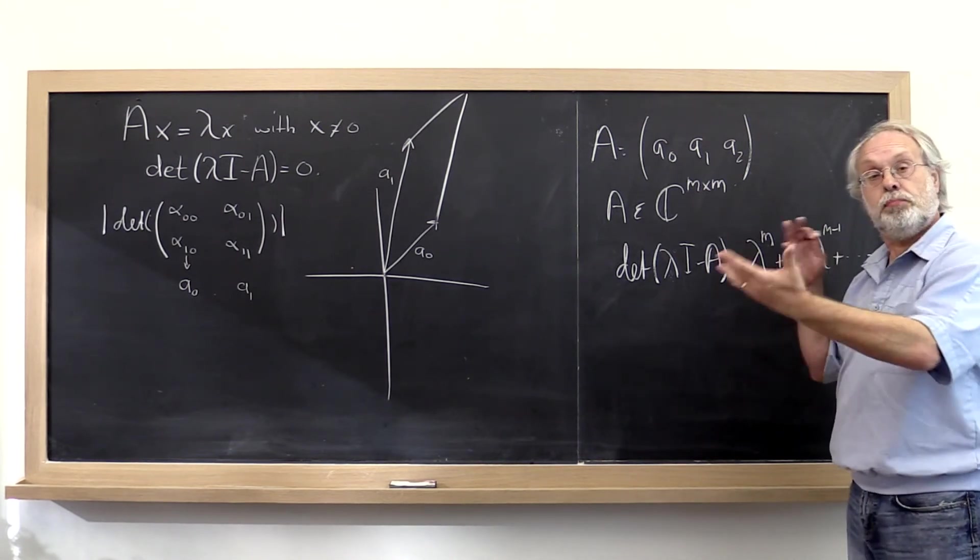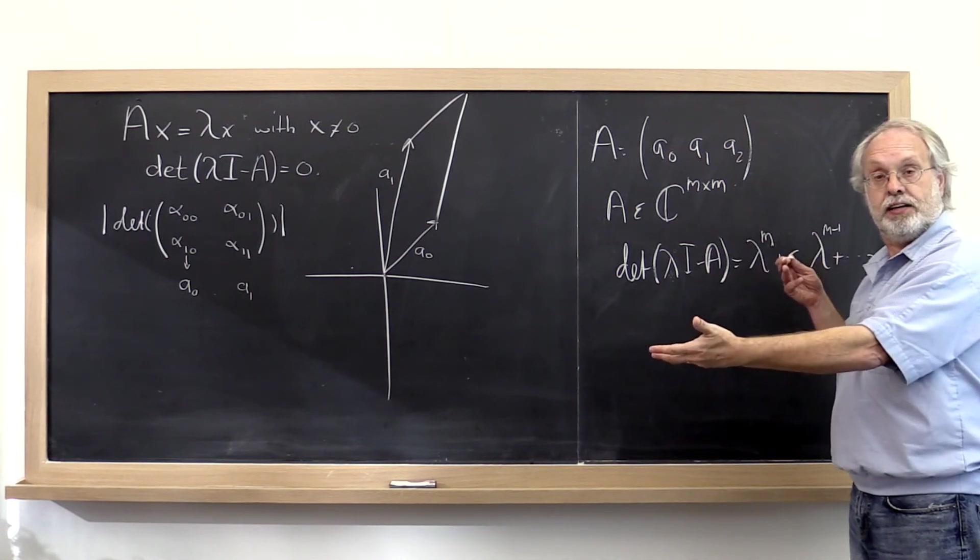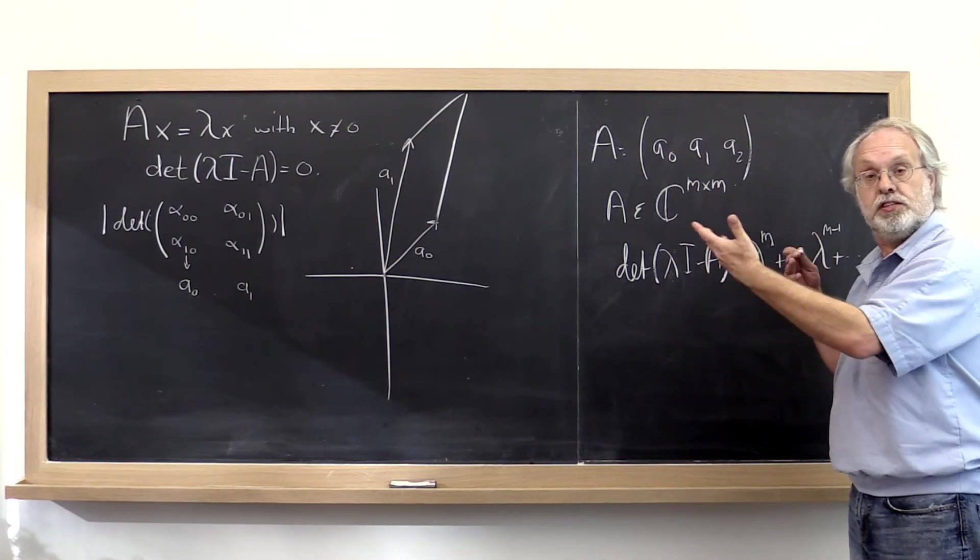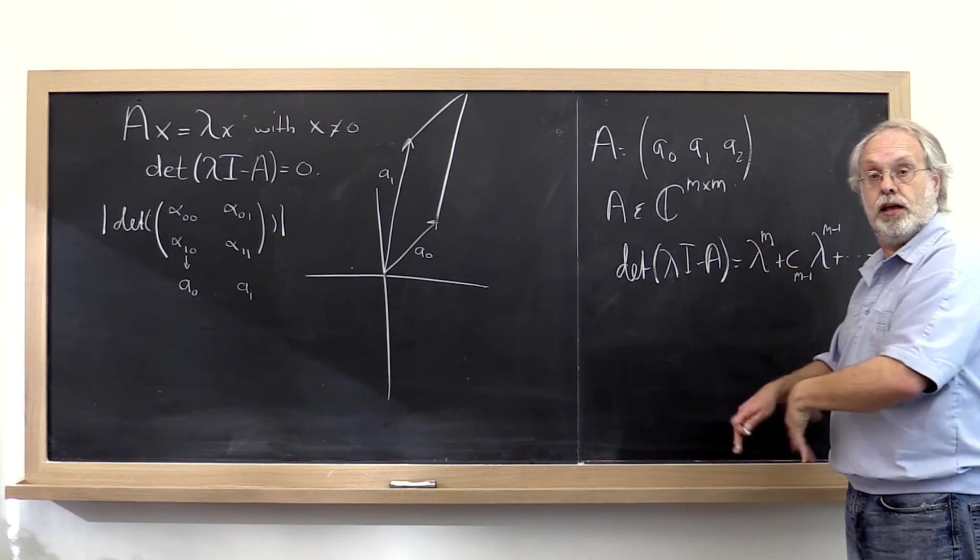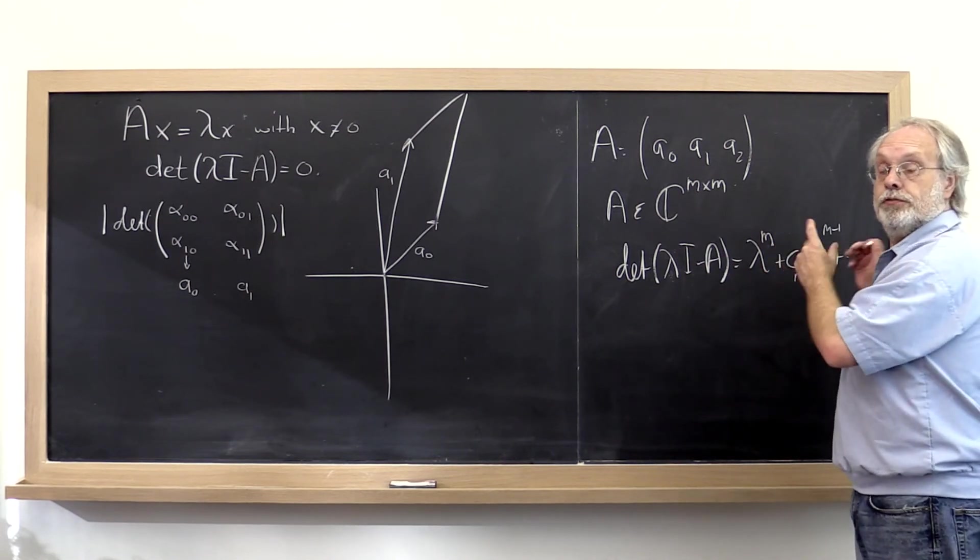So there are all these little parallels between properties of the eigenvalues of the matrix and the roots of the polynomial. Here's another one.